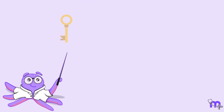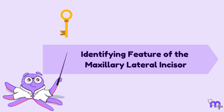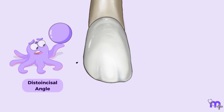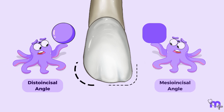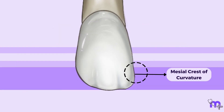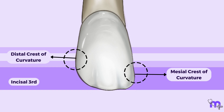Key points to remember from the outline are the following side identification features for the tooth. The disto-incisal angle is more rounded than the mesio-incisal angle. The mesial crest of curvature is at the junction of the incisal and middle third, while the distal crest of curvature is located more cervically at the middle of the middle third.